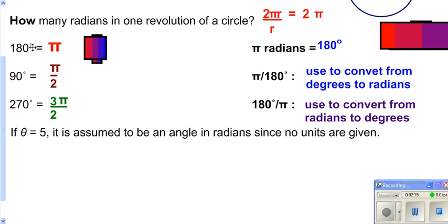Whenever you are dealing with degrees, you need to make sure you have the degree symbol. Down here we have an angle of 5. That is going to be radians because there is no degree symbol. If there is no units indicated, it is assumed to be radians.